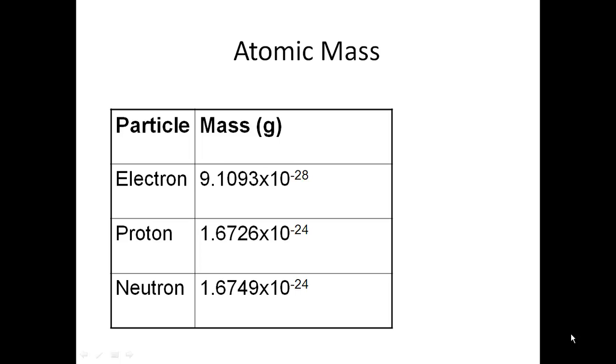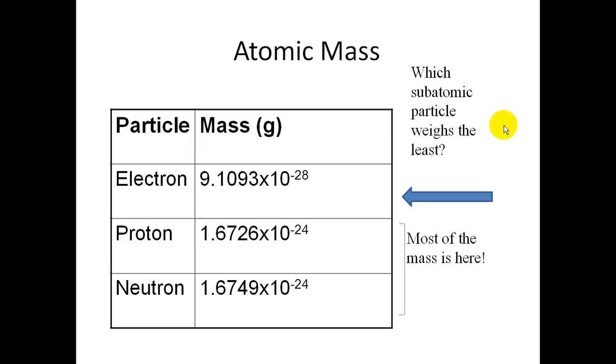If you look, they're in scientific notation, and notice the negative numbers here. So what subatomic particle weighs the least? The one that has the most negative would be weighing the least, so an electron weighs the least. Which makes sense, because in our podcast first part, we just stated that the nucleus has most of the mass, which is the protons and neutrons.